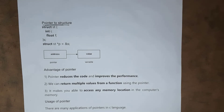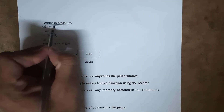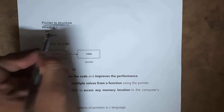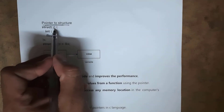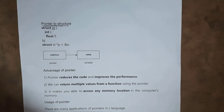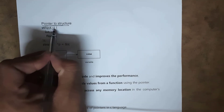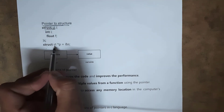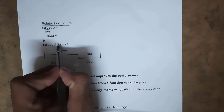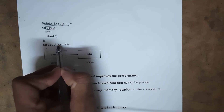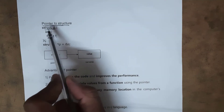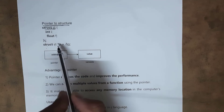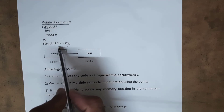We can also create a pointer to a structure. As we know, we create a structure using the struct keyword. I gave the structure name as st, and inside structure st I wrote int i and float f, giving a short name s to this struct st instance. Now to create a pointer for it, I wrote struct st *p, where * represents a pointer variable. I store the address by writing &s, so this pointer variable p will store the address of structure s.